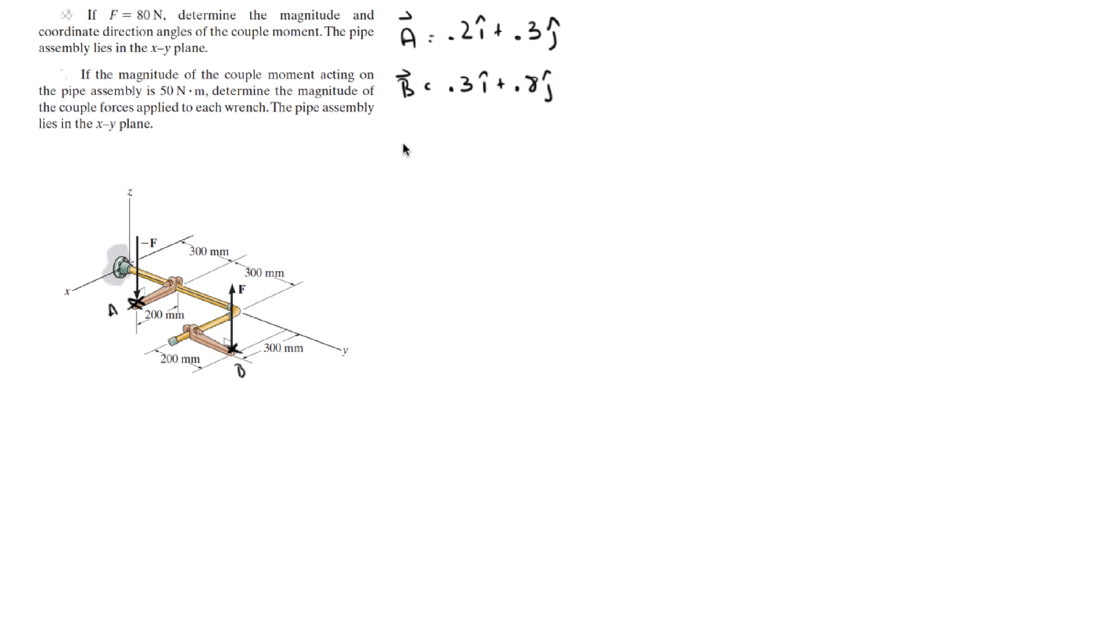So, the vector that goes from A to B is equal to B minus A, which comes out to be 0.1 in the i plus 0.5 in the j.